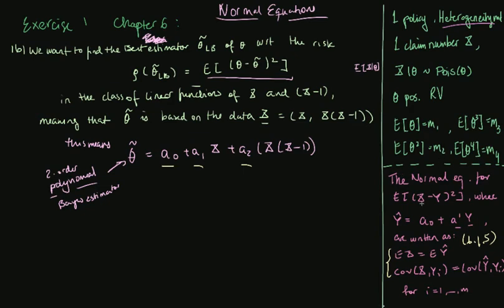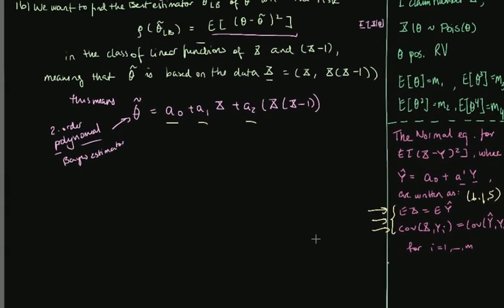Essentially, you take the thing you want to estimate — x — and write its covariances with each of the yi data points on one hand, and on the other hand write the covariances of the approximation y-hat with the data points. You want these to be as equal as possible, and you find the a's that do that. The normal equations are what is written up here, though it is somewhat hard to understand exactly what this means, so let us write it up more nicely.